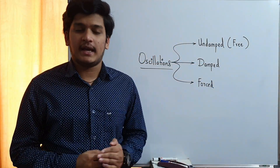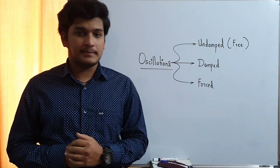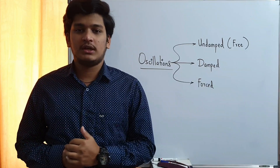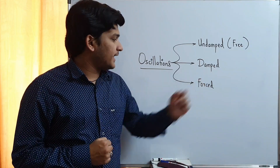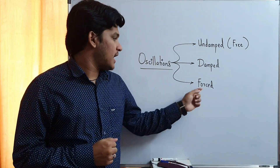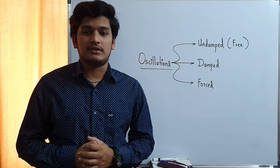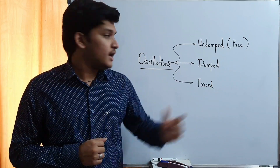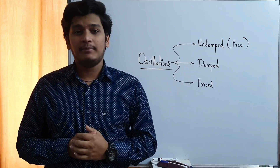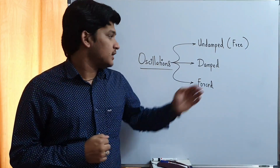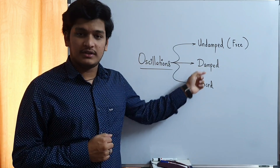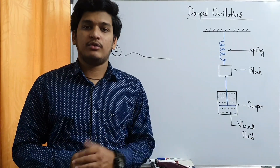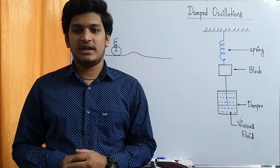Oscillations can be categorized into three different types. First is undamped oscillations, jisko log free oscillations bhi bol sakte hai. Second is damped oscillations and third is forced oscillations. So abhi tak ke lectures mein jo bhi oscillations hum log padhe, those were of the undamped type. So in this lecture we will study what are damped oscillations and we will also study what are forced oscillations.